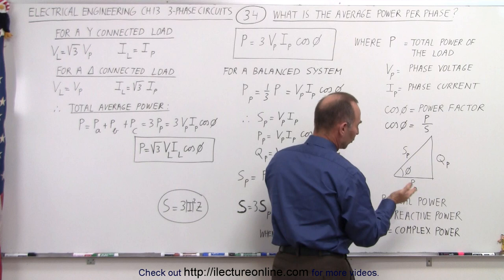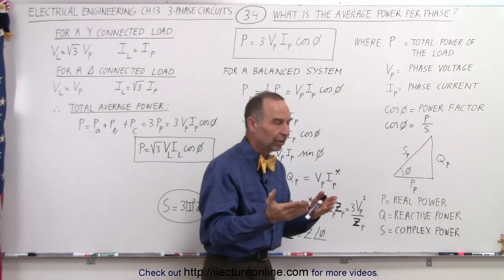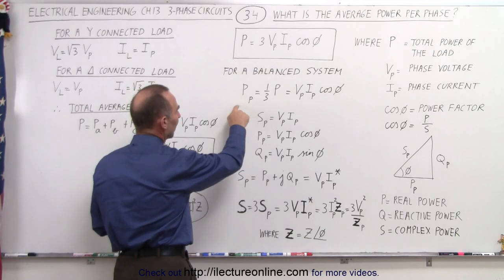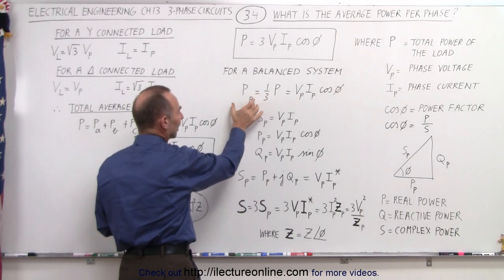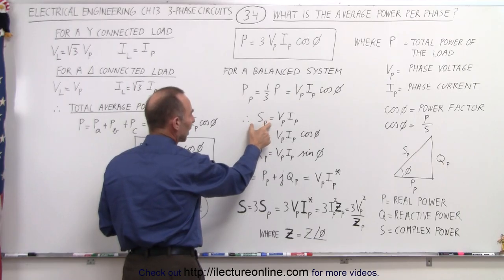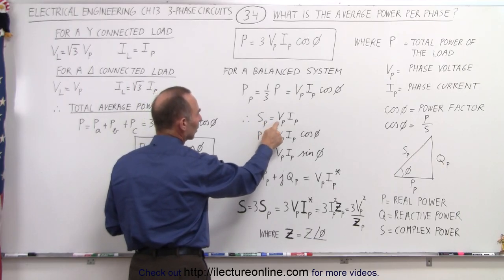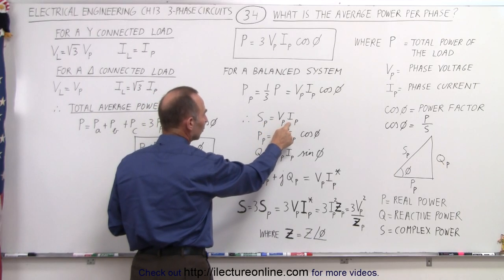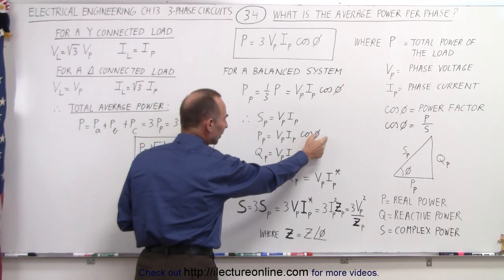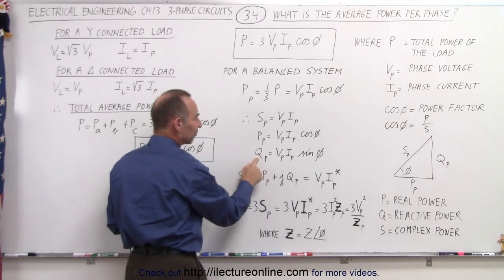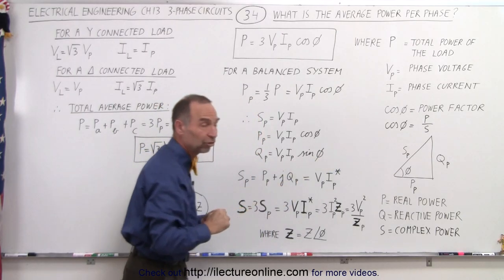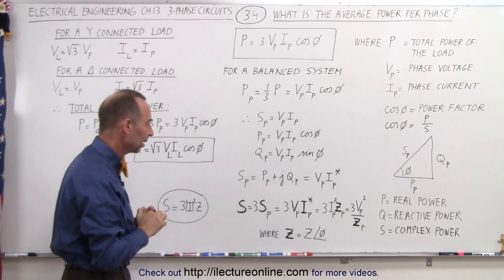Those will be equal if the phase angle goes to zero. For a balanced system, we take one-third to get the phase power. We can define the complex power as the product of the phase voltage times the phase current. The real power is the same but times the cosine of phi, the power factor, and the reactive power is the same but times the sine of phi. You can get those relationships from the power triangle quite readily.